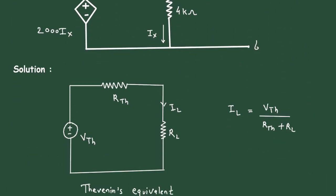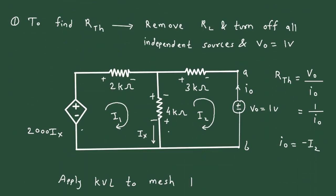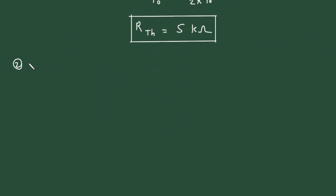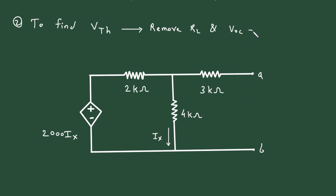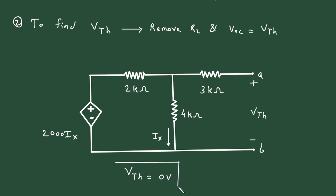Our next step is to find the value of Vth, that is Thevenin's voltage. To find Vth, we remove Rl — but as we can see, Rl is already absent here. The open circuit voltage Voc is equal to Vth. But in this circuit, as we can see, there is no independent source. So therefore Vth is equal to 0 volts.